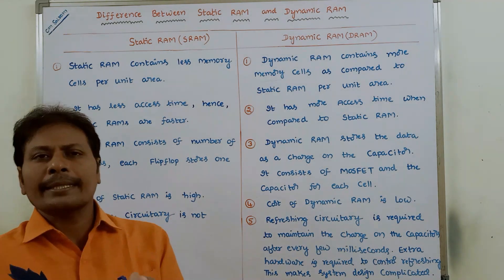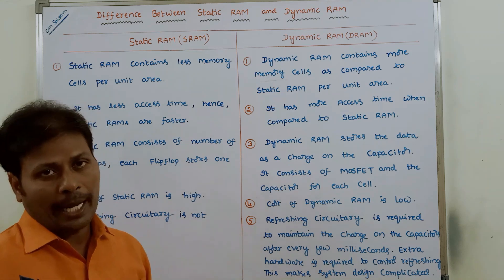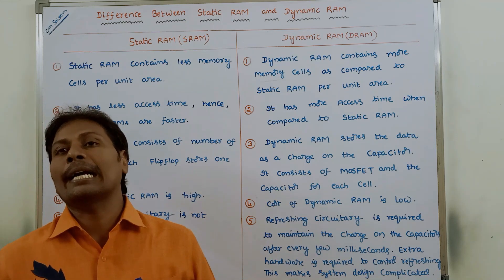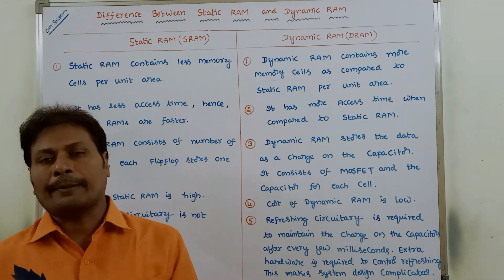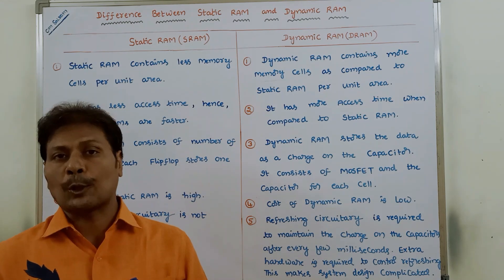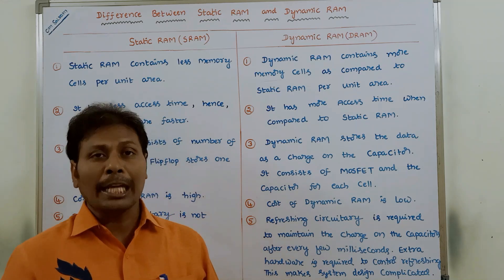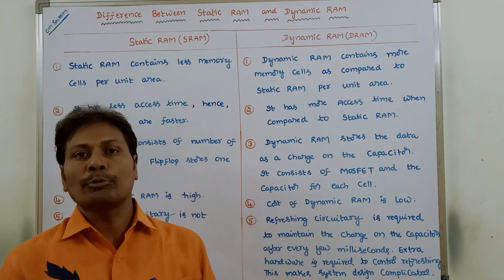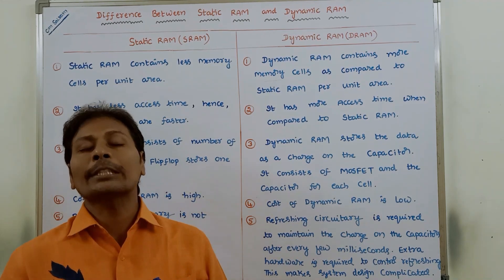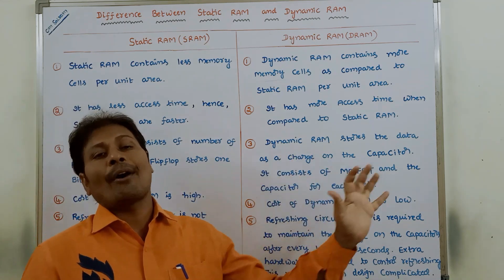The second difference relates to access time. To access a particular word using static RAM, it takes very little time. So the access time of static RAMs is lesser, which means static RAMs are faster. Whereas in the case of dynamic RAM, to access a particular word it takes more access time. Hence, dynamic RAMs are slower.